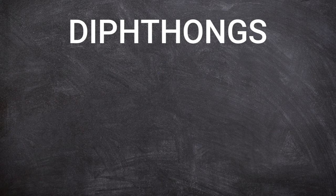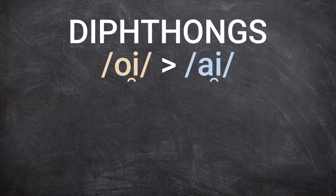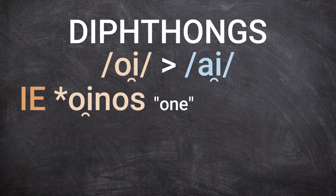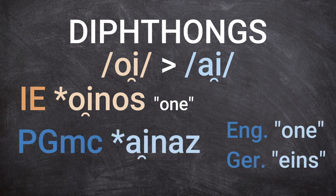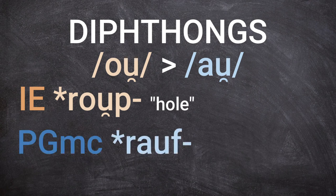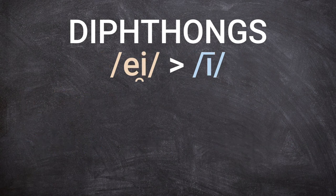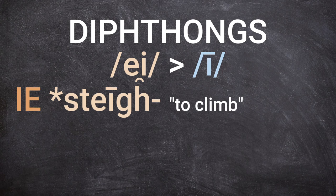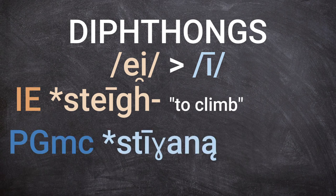Diphthongs behave like two short vowels in a row in their development from Indo-European to Germanic. For example, IE *oi becomes Proto-Germanic *ai: *oinos ('one') becomes Proto-Germanic *ainas, giving English 'one' and German 'eins.' Indo-European *oup- ('hole') becomes Germanic *auf-, so short O becomes A and short U stays U, giving Old Icelandic 'rauf.' The only diphthong that diverges is IE *ei, which becomes Ē in Proto-Germanic: the root *steigh- ('to climb') gives Proto-Germanic *stīgranan, Gothic 'steigan,' and German 'steigen.'